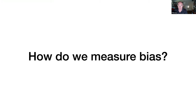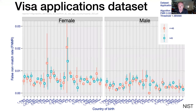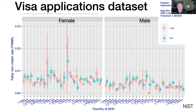If we can measure bias, we can probably correct it. NIST — the National Institute of Standards and Technology in the US — has a long track record on measuring the performance of face recognition algorithms, and recently they have started to measure bias. One of many hundreds of tables in their December 2019 report shows the false non-match rate for different types of people divided by gender and country of origin — female on the left, male on the right.